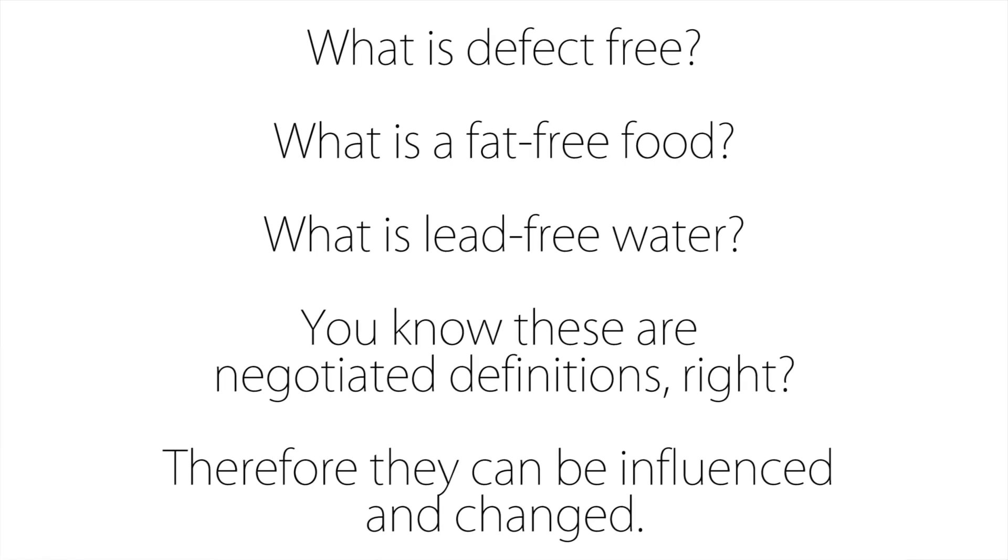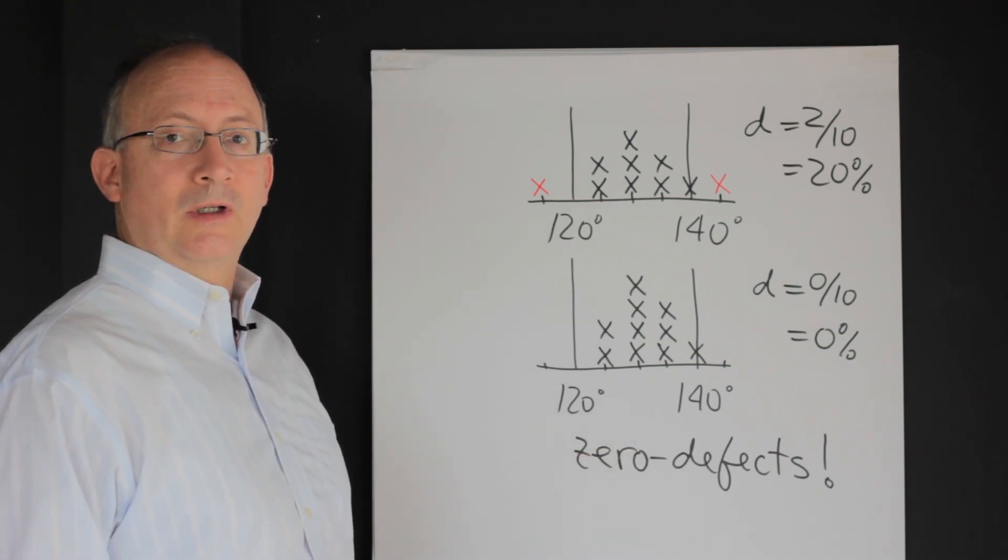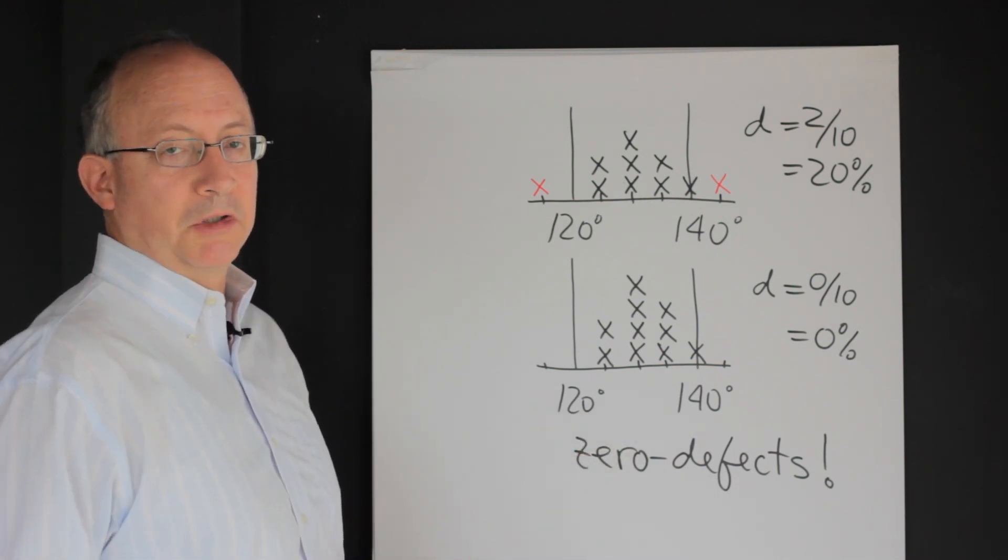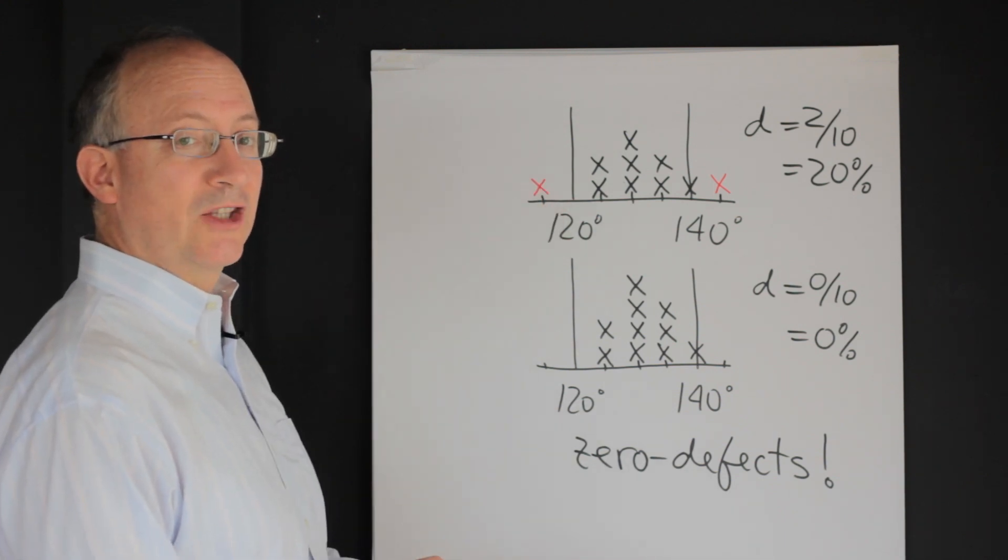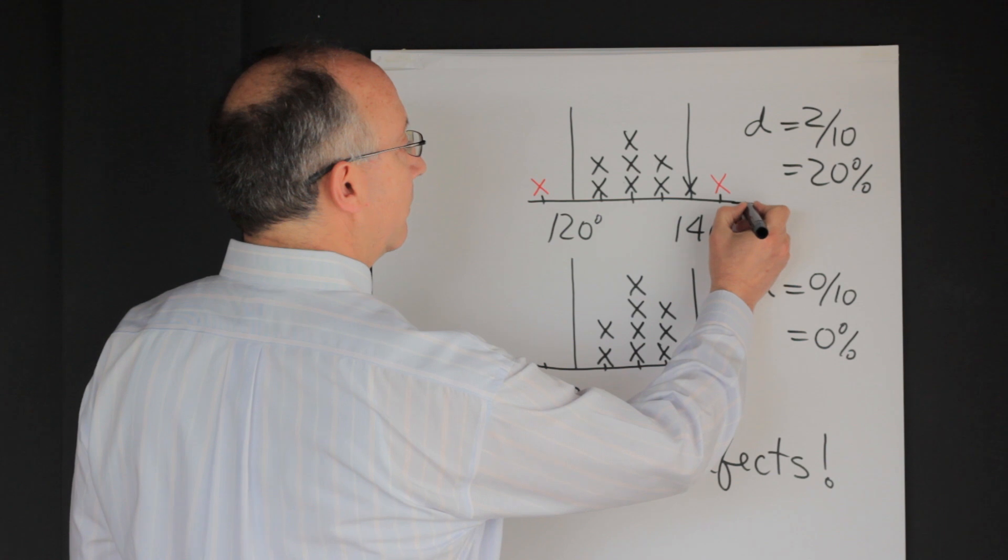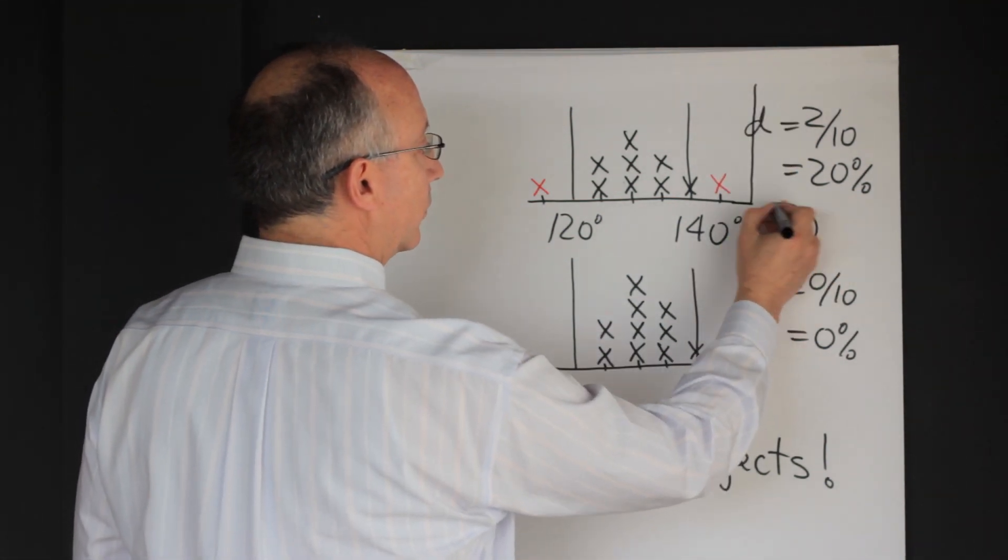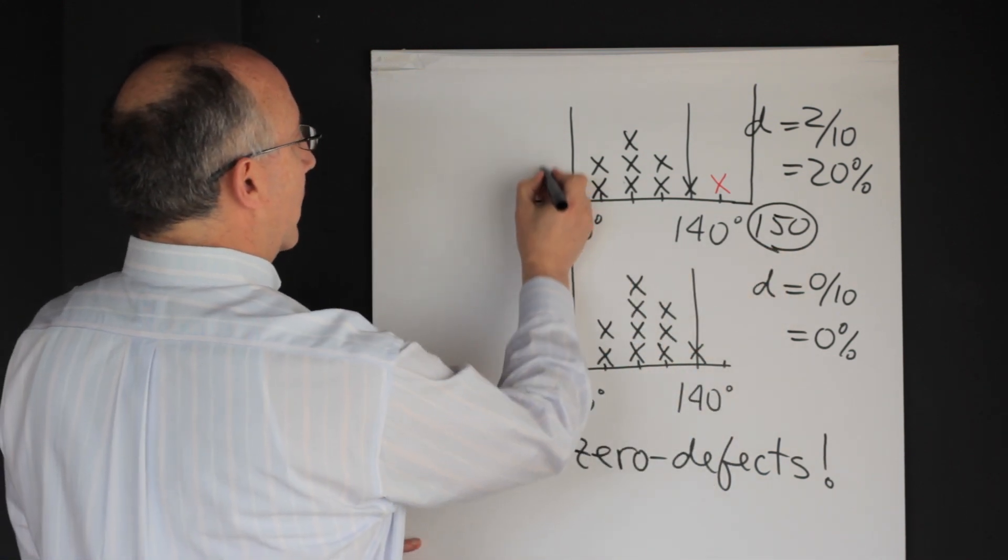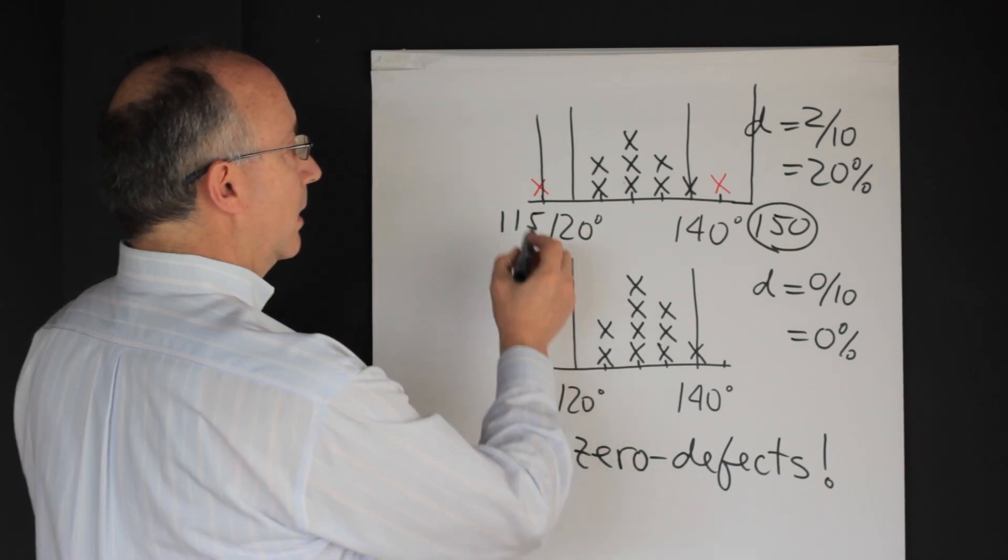So, for instance, what would happen if you could convince customers that actually colder coffee is not so bad and that hotter coffee is also not so bad? Graphically, the idea of hotter coffee is also good would be as if, in the original chart, we had changed these parameters, these limits, to say something like this. Look, actually, 150 degrees is the new standard and actually, let's say, 115 degrees is the new standard.